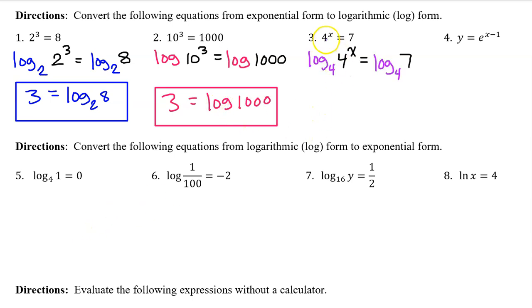Because we have a base 4 on number 3, we take log base 4 of both sides. The log base 4 and the base 4 cancel each other out, leaving behind the x. And then we bring down the log base 4 of 7.